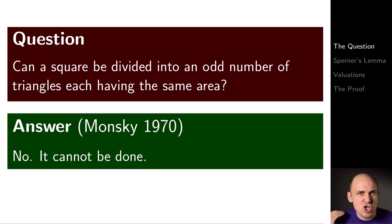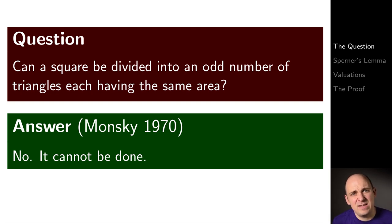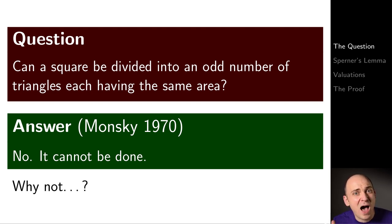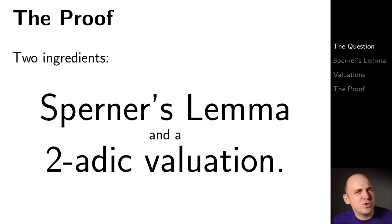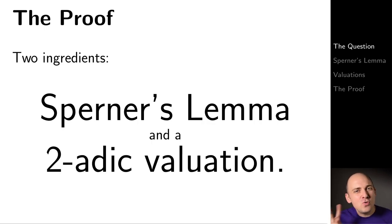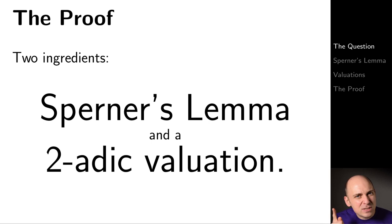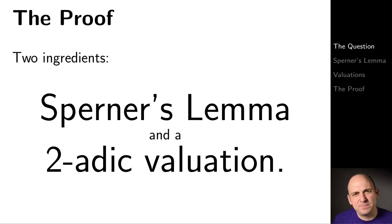The answer is no, it cannot be done. This is due to Monsky in 1970. But the real question is why not? Like a peanut butter and jelly sandwich, there are two ingredients to this proof: Sperner's lemma and a 2-adic valuation.